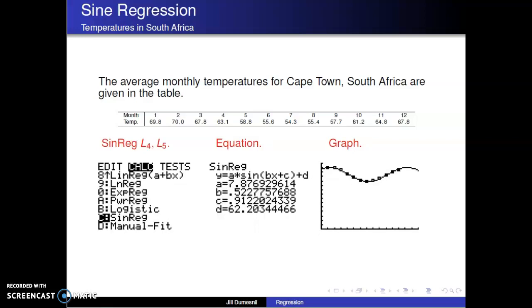Therefore, we use sine regression to produce a sine function modeling our temperature situation. We can graph the regression function with our scatter plot to see how well the function fits the data.